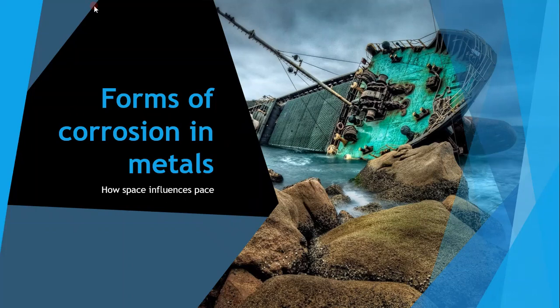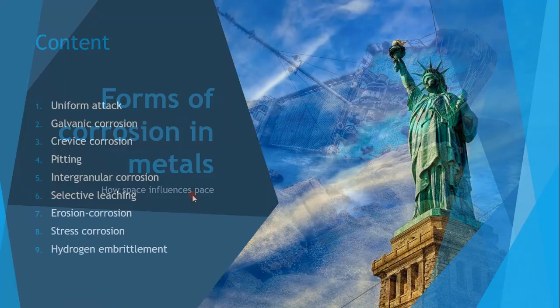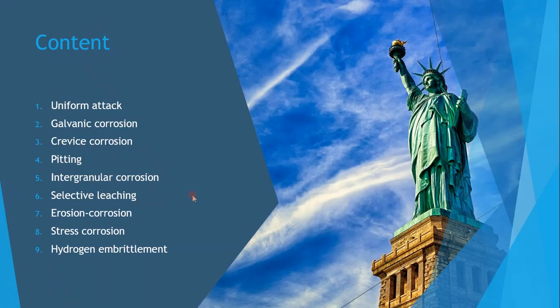This video is going to be all about the forms of corrosion in metals. The subtitle 'How Space Influences Pace' reflects how spatial geometry changes the oxidation rate. We're going to cover uniform attack, galvanic corrosion, crevice corrosion, pitting, intergranular corrosion, selective leaching, erosion corrosion, and stress corrosion.